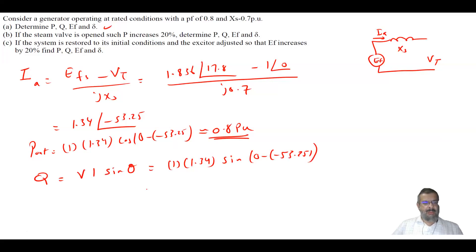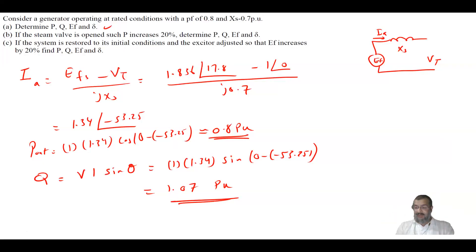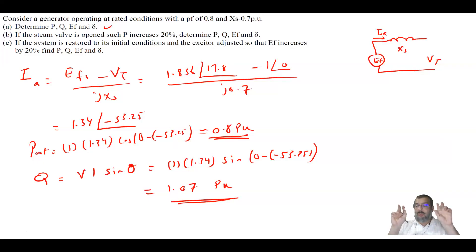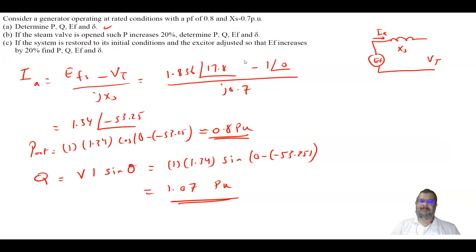The reactive power Q equals V times I times sine theta, which is 1 times 1.34 times sine of 53.25, giving Q equals 1.07 per unit. The reactive power increased from 0.6 to 1.07 because increasing the field current increases flux, and reactive power is produced in the form of flux — so more flux means more reactive power produced.